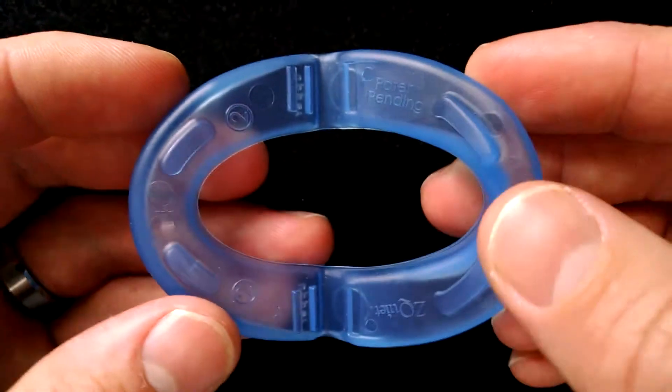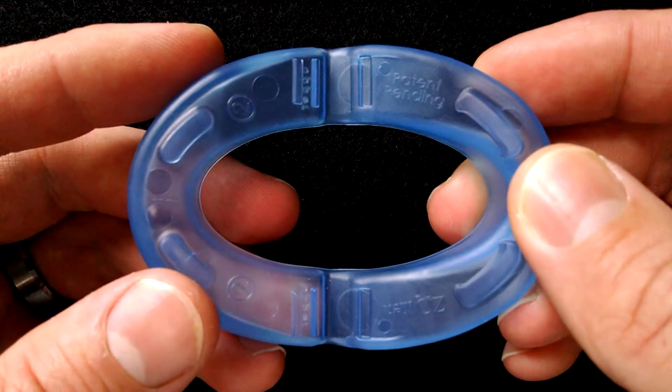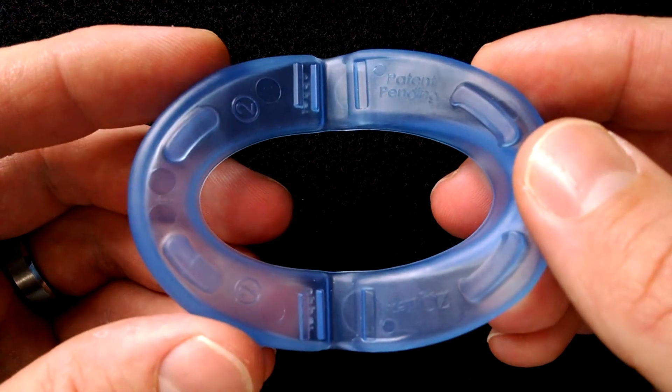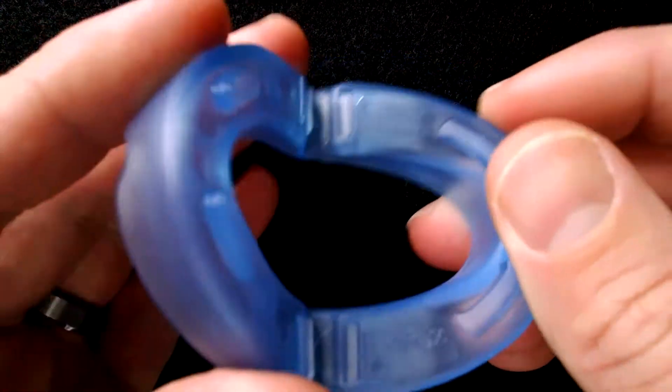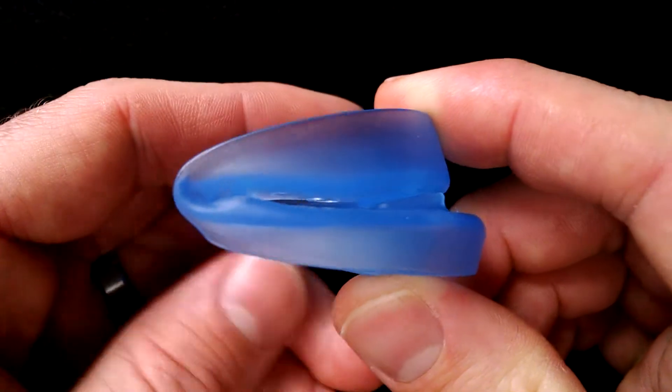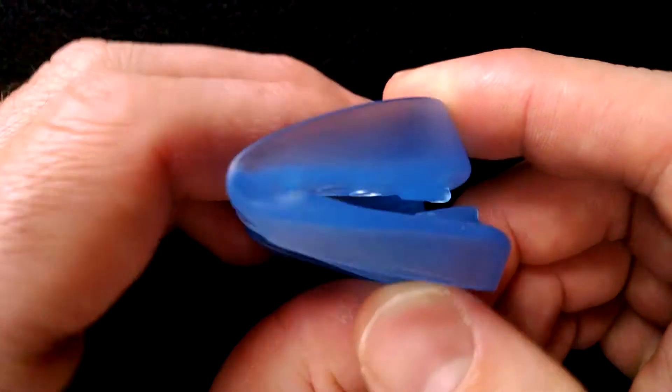The Z-Quiet is ready to use straight out of the box so you don't have to heat this up and custom mold it or anything like that. You simply rinse it off under warm water and then put it to use.